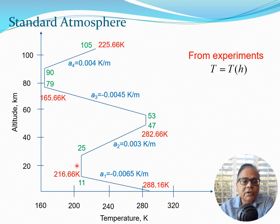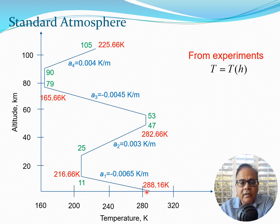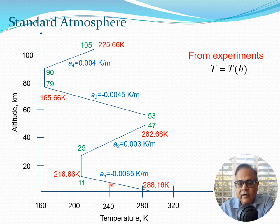We can immediately use the standard atmosphere to figure out the temperature at a given height. If you have a problem where an aircraft is flying at 13 kilometers height, you can immediately figure out that the temperature should be 216.66 Kelvin. If you have an aircraft flying at, say, 6 kilometers, you have to get into the table and interpolate. Tables for this are often specified at the end of textbooks, for example in the flight mechanics area.